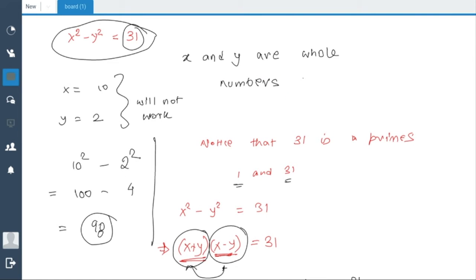That means if we replace x by 16 and y by 15, so 16² - 15², which happens to be 256 - 225, is exactly 31. And since there are no other factors of 31, this is the only one solution.